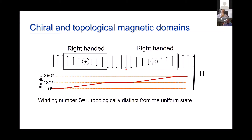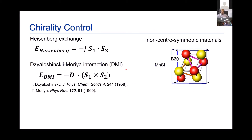This 360-degree domain wall was considered a problem in the old days because it was much harder to remove from devices with an applied field. But now what was once a bug is a feature, and we're exploiting these topological structures in various ways. What allows this is control of the chirality. With fixed chirality, topologically distinct states emerge from a combination of Heisenberg exchange — wanting parallel or anti-parallel spins — and the Dzyaloshinskii-Moriya interaction, or DMI, which goes as S1 cross S2.